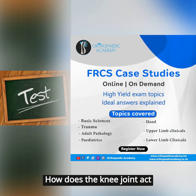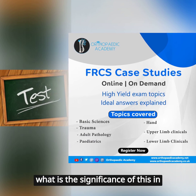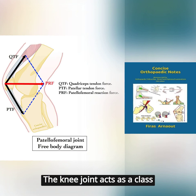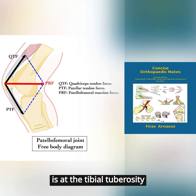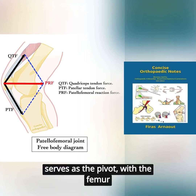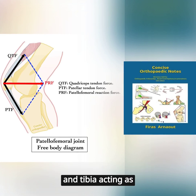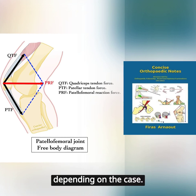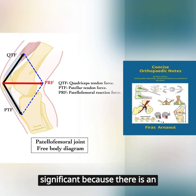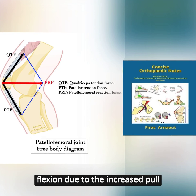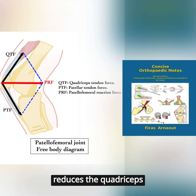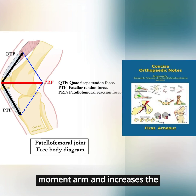How does the knee joint act as a class 3 lever and what is the significance of this in orthopaedics? The knee joint acts as a class 3 lever, where the effort is at the tibial tuberosity where the patella tendon inserts. The knee joint itself serves as the pivot, with the femur and tibia acting as either the fixed or mobile component depending on the case. In orthopaedics, this is significant because there is an increased JRF with knee flexion due to the increased pull of the quadriceps muscles. Additionally, patellectomy reduces the quadriceps moment arm and increases the quadriceps force.